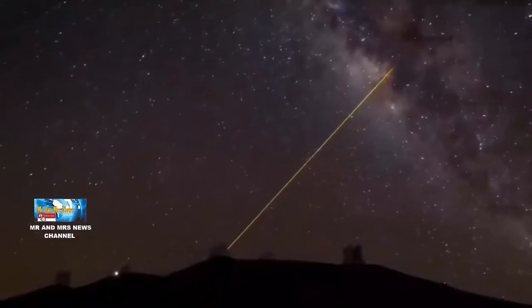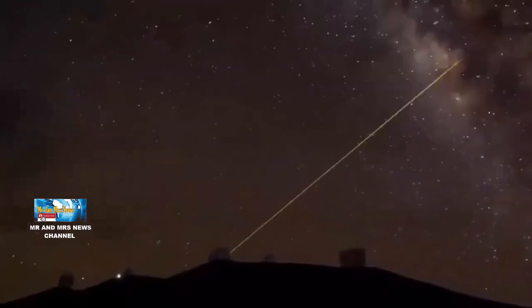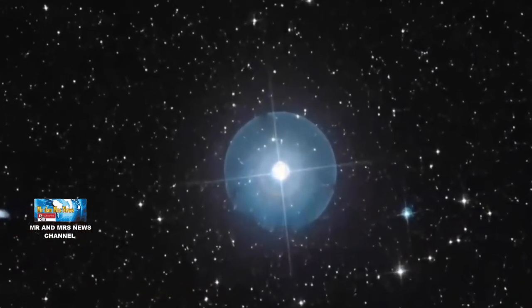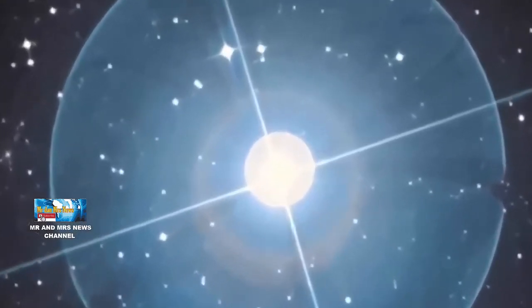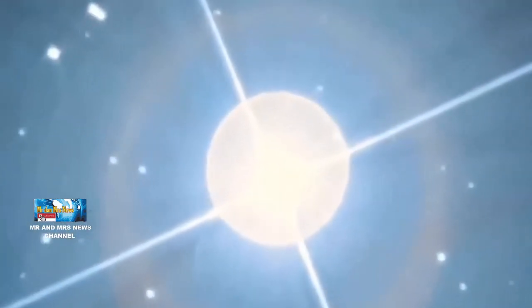Super Earth meluncur masuk dan keluar dari zona layak huni bintangnya, dan itu berputar di sekitar bintang katai merah yang disebut ROS-508, sama seperti bumi kita mengorbit matahari.